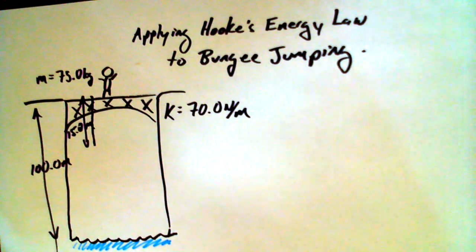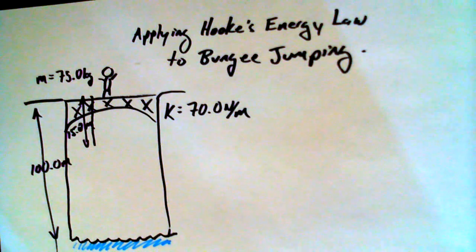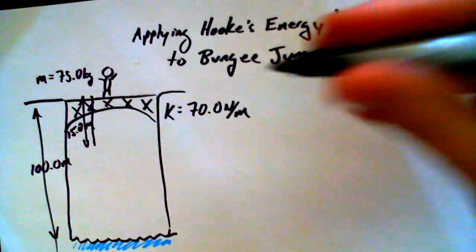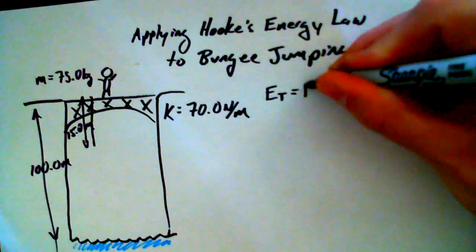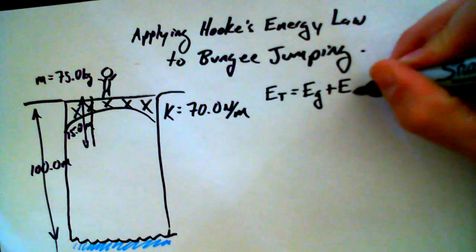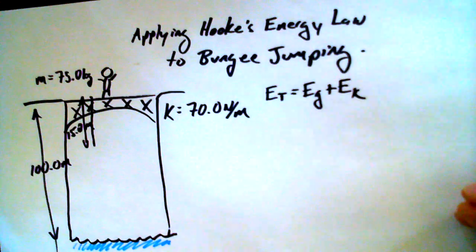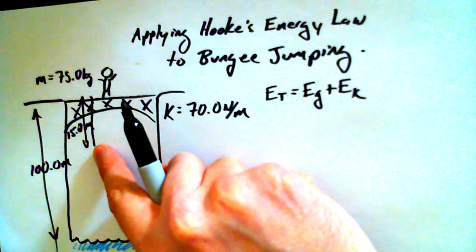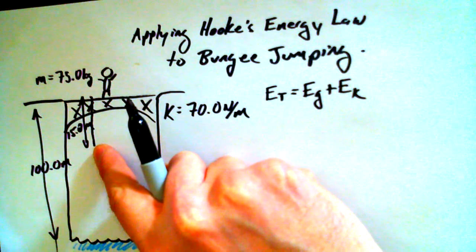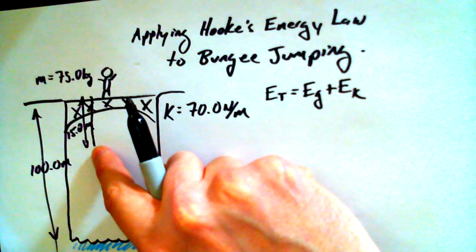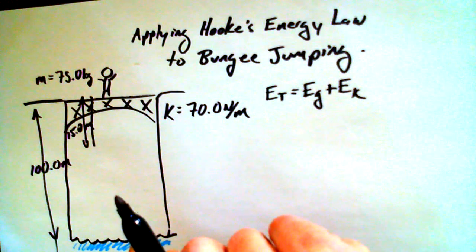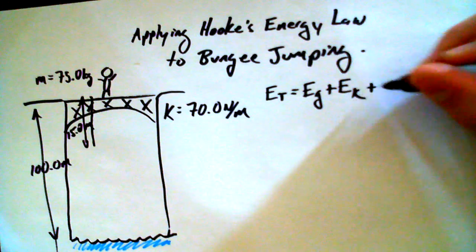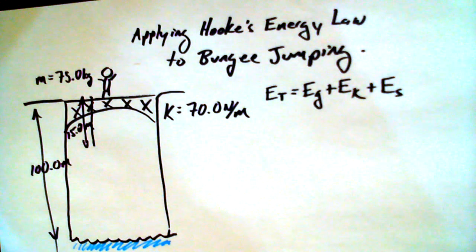We've said before that we can talk about conservation of energy using more than just gravitational potential energy and kinetic energy. What we've said in the past is that E total equals EG plus EK. Now I want to propose that if this person falls past the end of the slack in the bungee cord, elastic potential energy — spring energy — gets added on top of their EG plus EK.